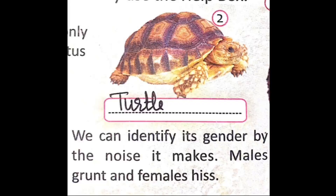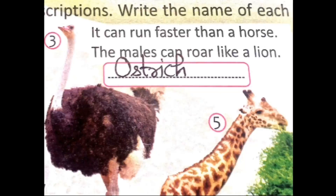T-U-R-T-L-E. Now look at the third picture. It can run faster than a horse. The males can roar like a lion. Jo male ostrich hota hai, woh lion ki tarah sound produce karta hai, ghurane ki sound produce karta hai. The answer is ostrich. O-S-T-R-I-C-H.